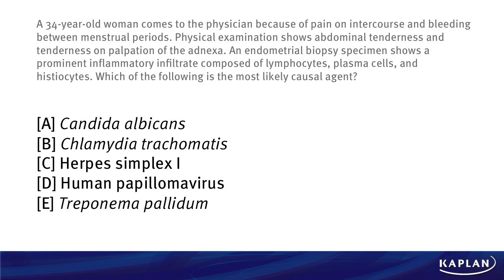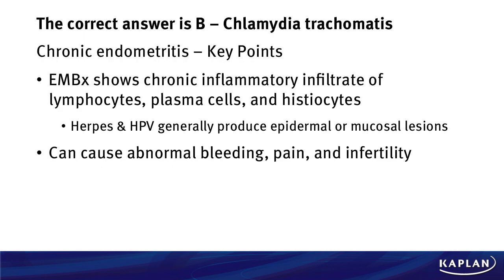The answer to this vignette is B. Chlamydia trachomatis. The key point here is we're dealing with chronic endometritis. On the endometrial biopsy, this will show a chronic inflammatory infiltrate of lymphocytes, plasma cells, and histiocytes. And it's very key to look for that plasma cell infiltrate. You're going to see that on your pathology reports, either on the boards or on the wards. And when you see that, think of chronic inflammatory disease.